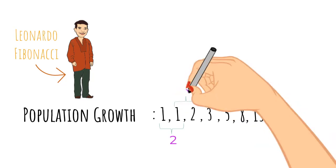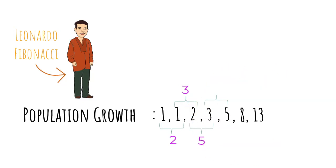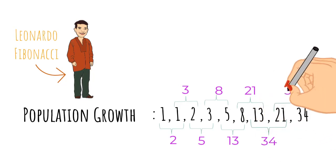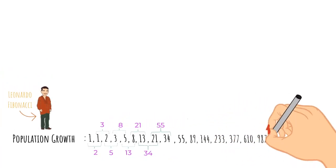And then two plus three makes five. And then three plus five makes eight. And then five plus eight makes thirteen. Eight plus thirteen makes twenty-one. Thirteen and twenty-one makes the next term thirty-four. Twenty-one and thirty-four make fifty-five. And we can continue this forever if we wanted to.